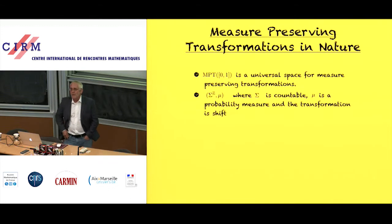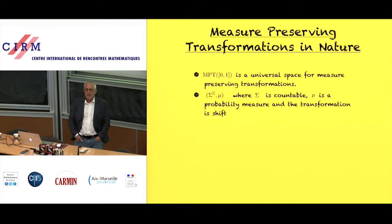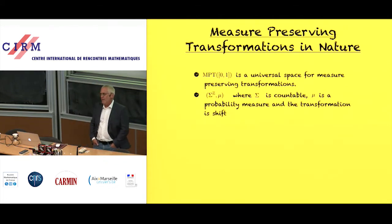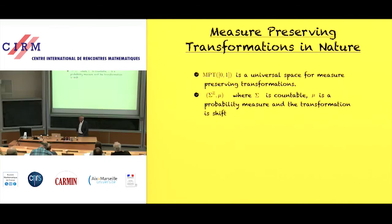Another example I'll talk about a lot: take some alphabet sigma, which is countable or finite — we're going to be worried about finite alphabets. You take sigma to the Z, with a natural shift action, and a probability measure mu invariant under the shift. These are the so-called symbolic systems.